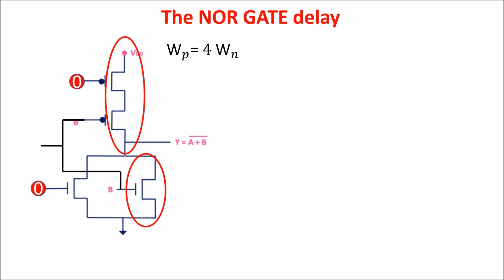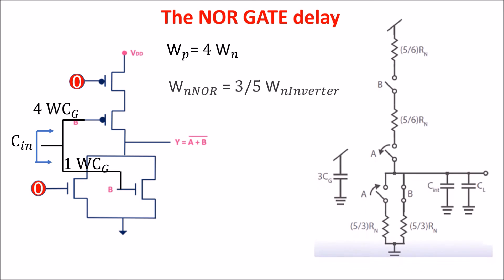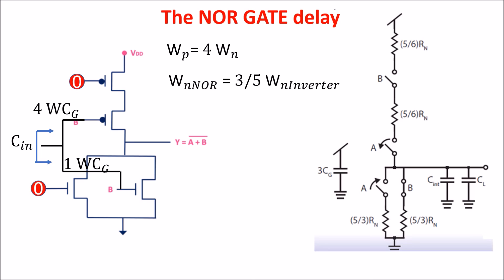Moreover, we want the input capacitance being the same as the inverter, so 3WCgate, but we see 4WCgate toward the PMOS and 1WCgate toward the N MOS, so 5WCgate. So, the solution is to have a W of 3/5 in respect to the W of the N MOS of the inverter. In this case, the resistance of the N channel is 5/3 times Rn and that of the PMOS is 5/6 times Rn.